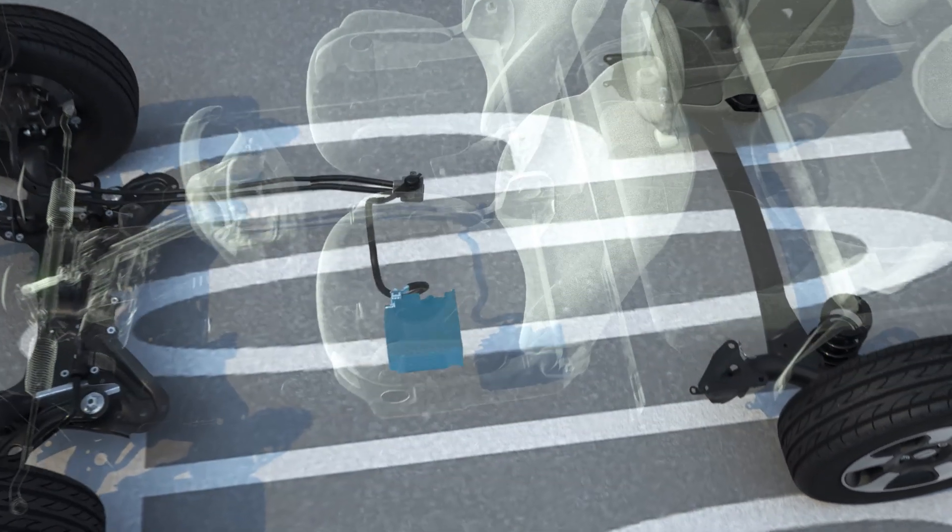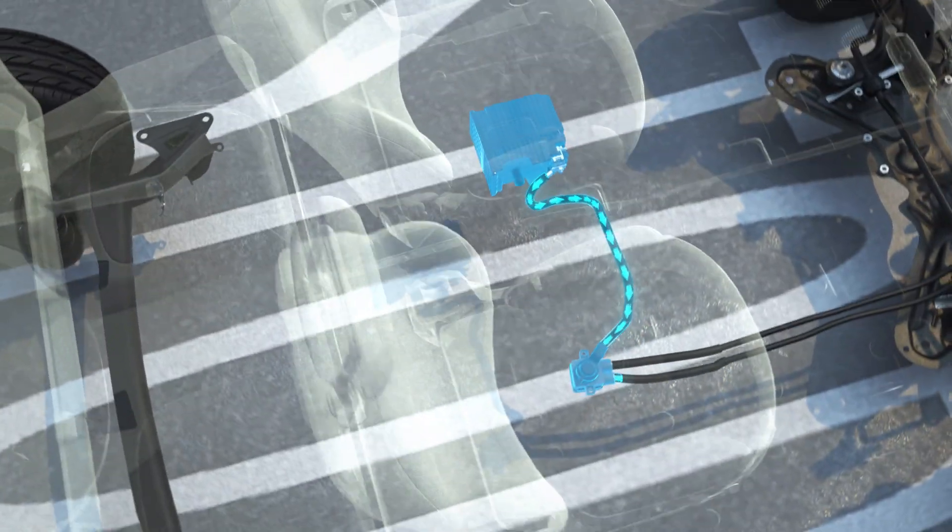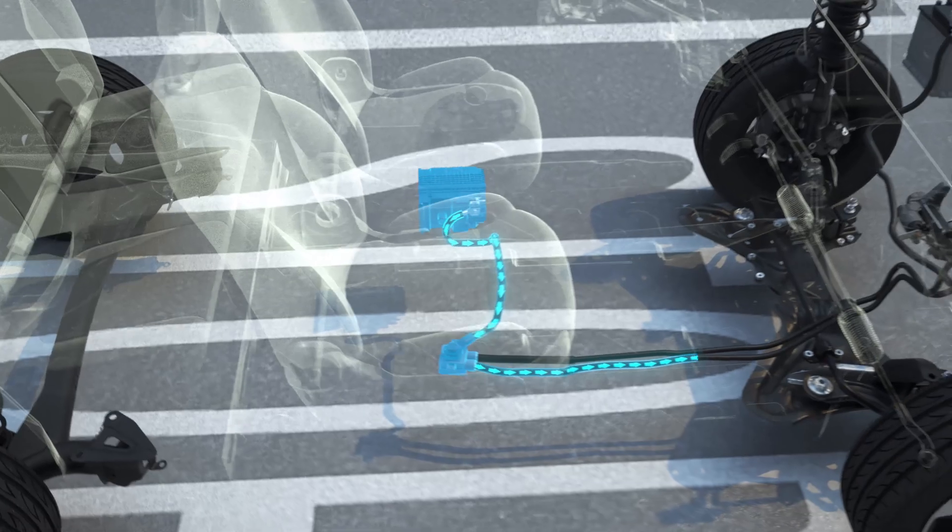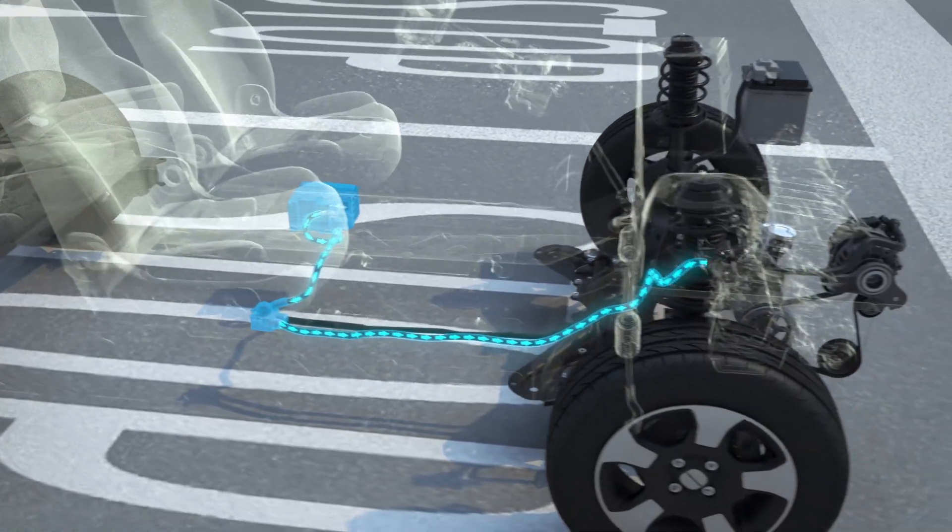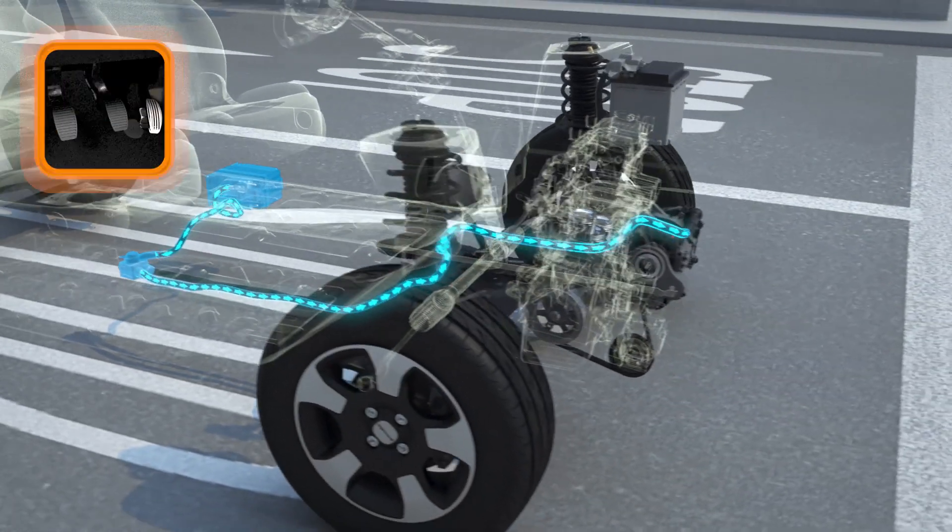When restarting the engine from standstill using the start and stop function, the electric motor restarts the combustion engine using the energy stored in the lithium battery. This ensures a more efficient and comfortable restart than a conventional start and stop function.